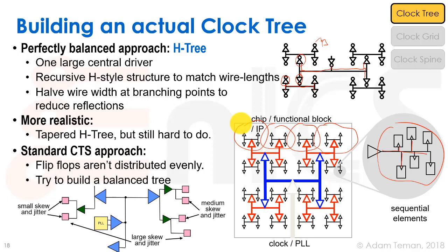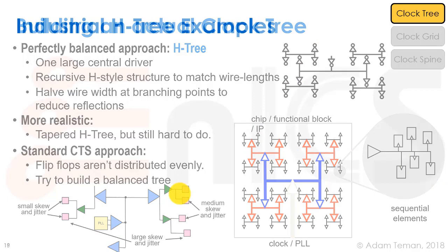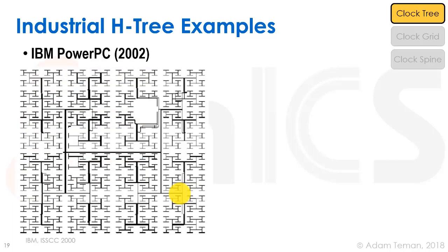That brings us to the standard CTS approach. Since flip-flops aren't distributed evenly, we build a tree that is balanced but not necessarily perfectly so. The assumption is that flip-flops that are close to each other — in the same module with lots of paths between them — hang off the same branch of the tree, so skew is low anyway. Modules farther apart may have some medium skew, while very distant modules with few paths between them will have higher skew we'll need to fix.